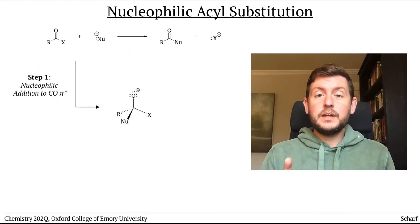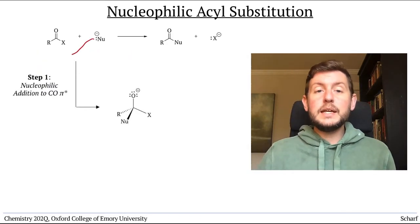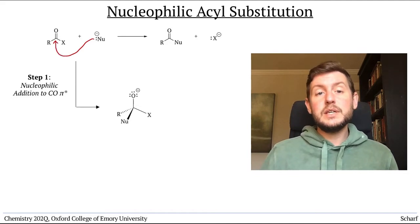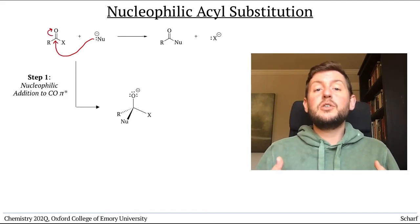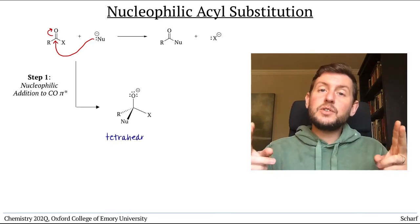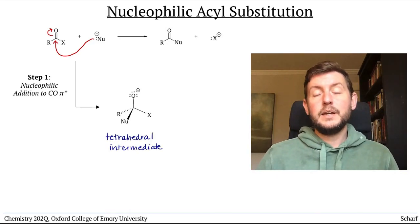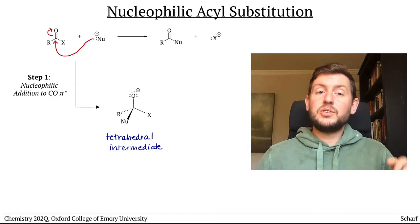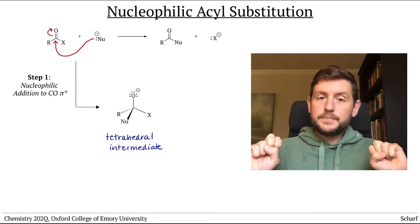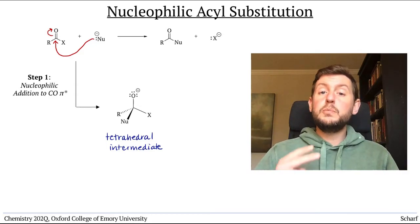The first step involves the nucleophile donating electrons into CO pi star to create a relatively high energy tetrahedral intermediate. This step, called nucleophilic addition, is governed by two primary factors.